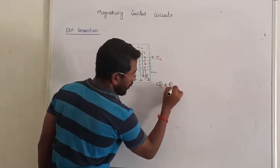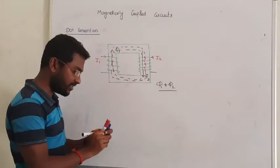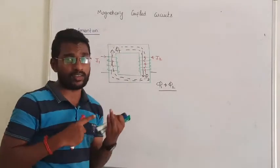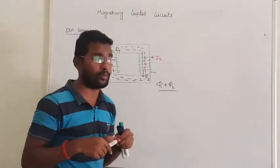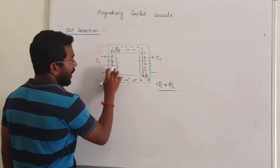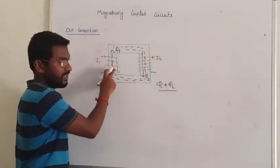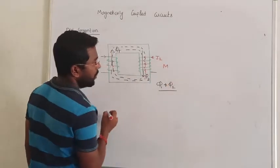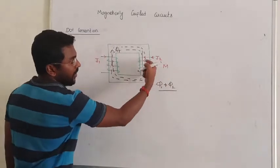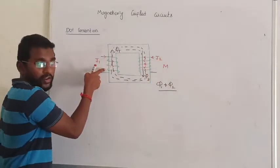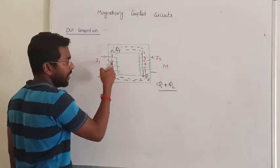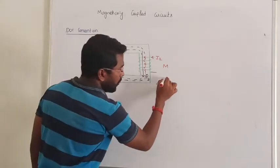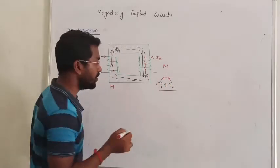So phi-1 and phi-2 are both aiding each other. The conclusion is: self-inductance and mutual inductance — if we are going to cut the flux, one mutual inductance will be generated. Since both fluxes are aiding each other, they are not opposing. When they aid each other, we get two contributions of mutual inductance, so the total inductance will become twice of M.